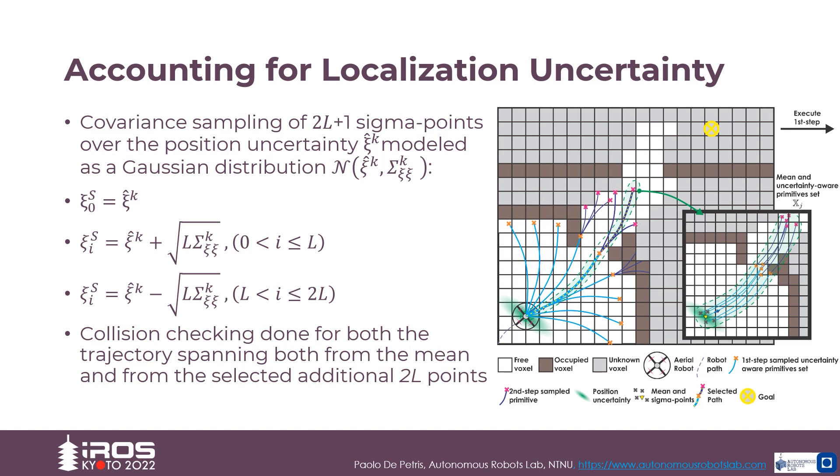To sample the covariance over the planning state C, we derive a set of 2L plus 1 sigma points, computed from the density according to the equation reported in the slide.